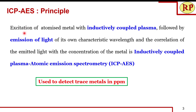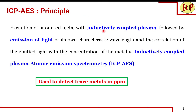The principle behind ICP-AES is the excitation of atomized metal with inductively coupled plasma, followed by the emission of light of its own characteristic wavelength, and the correlation of the emitted light with the concentration of the metal. It is very similar to flame photometry.